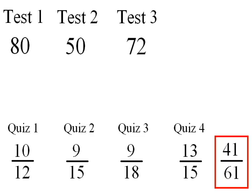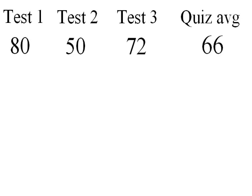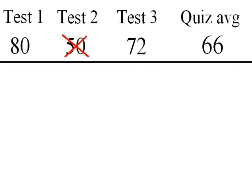In this case, you earned a total of 41 out of 61 points, giving you a 66 for your quiz average. These are your raw grades for the quarter. Then you do just like I said, you drop the lowest one and average the rest.